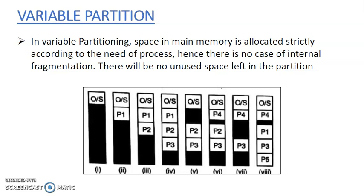The next one is variable partition. In this partition, there is no case of internal fragmentation — the main memory is allocated strictly according to the need of the process, so space is not wasted. There will be no unused space left in the partition. You can see in the diagram: the operating system is loaded into memory first, and all the rest of the memory is free.